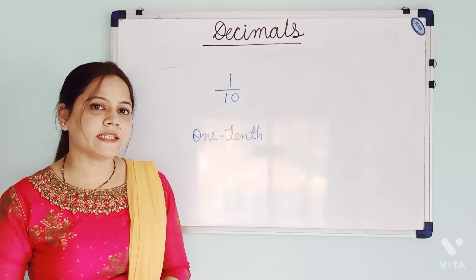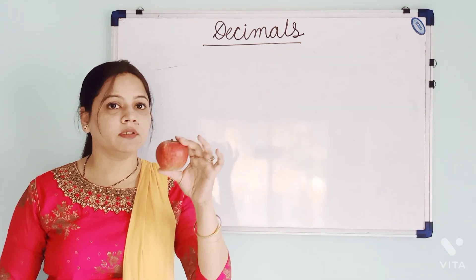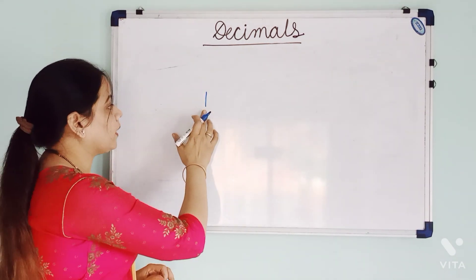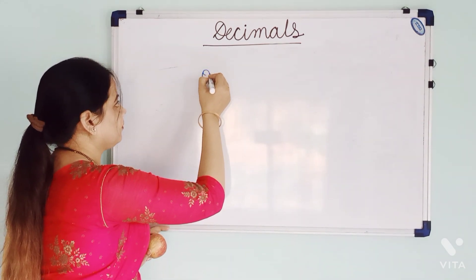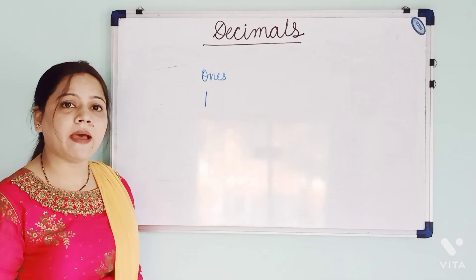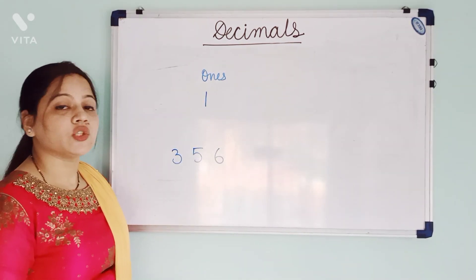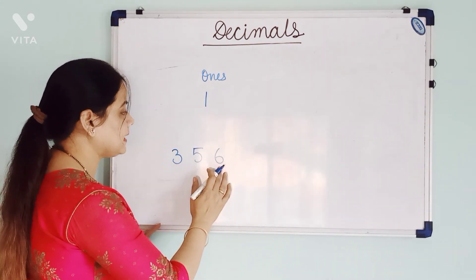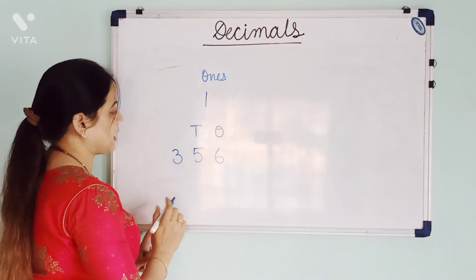Now, we will just recapitulate the place values. I have an apple — how many apples I have? 1 apple. So, what is the place value of this one? 1's. Now, suppose I have 356 apples. How we will place these digits according to their place values? This 6 is placed at 1's position, this is at 10's, and this is at 100's.